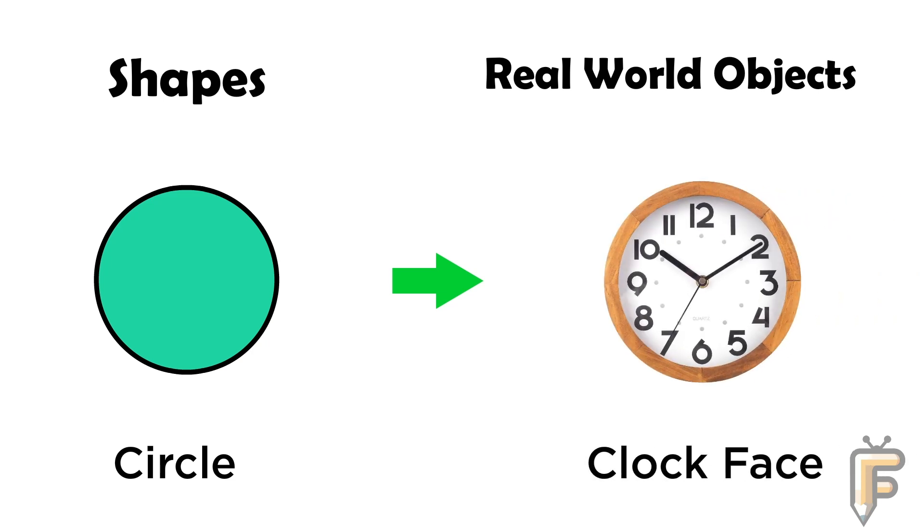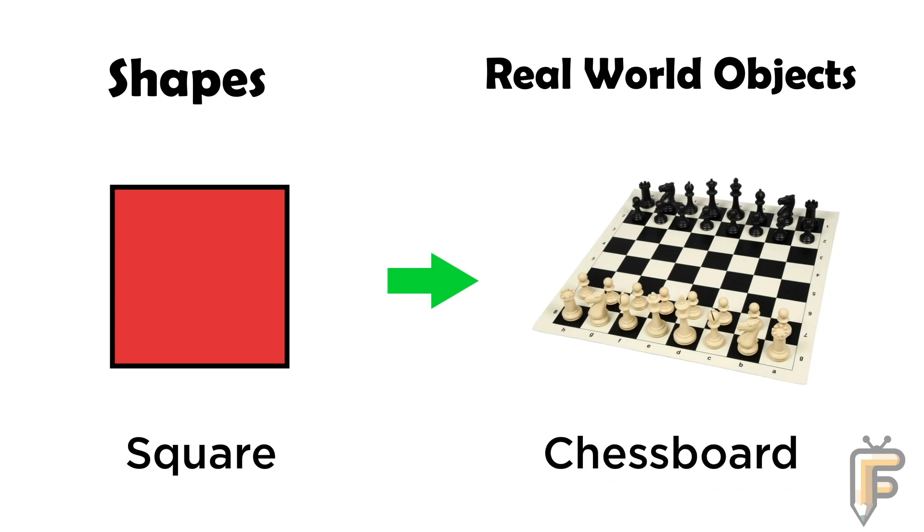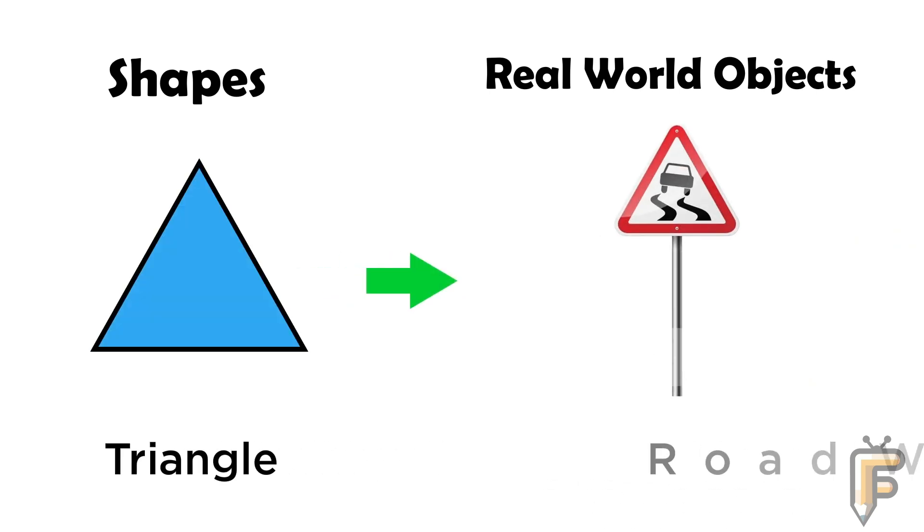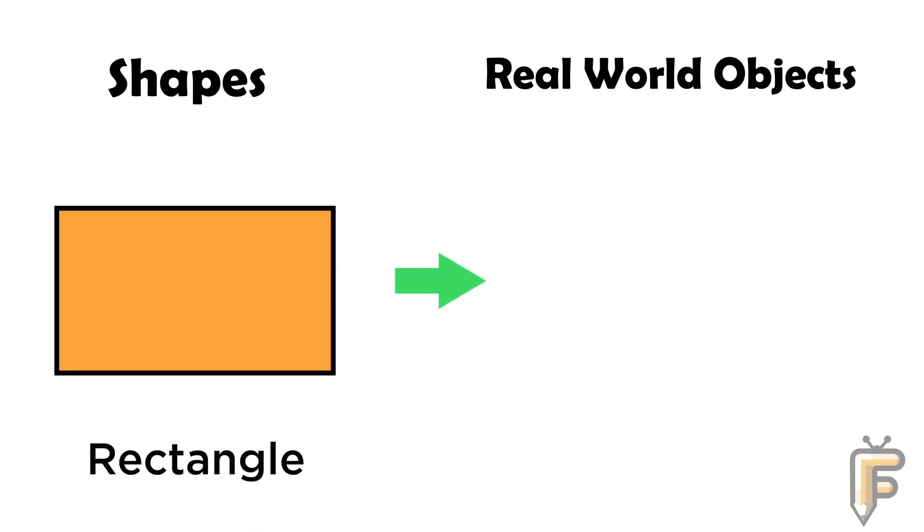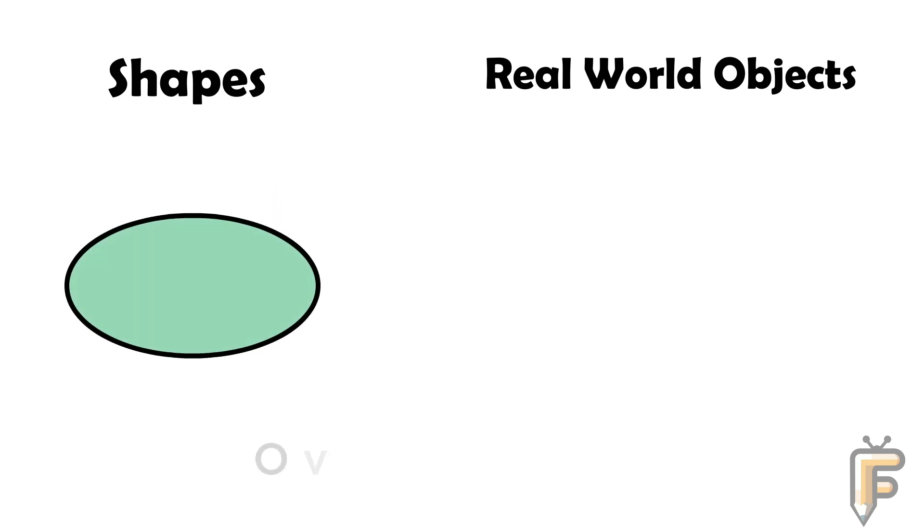Square: cheese board is square shape. Triangle: road warning sign is triangle shape. Rectangle: door is a rectangle shape. Oval: oval mirror.